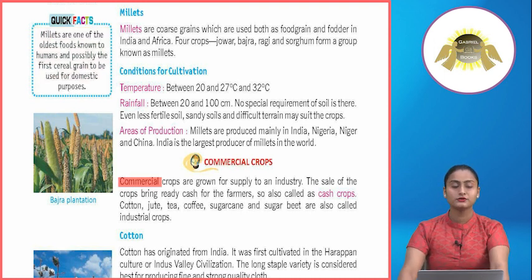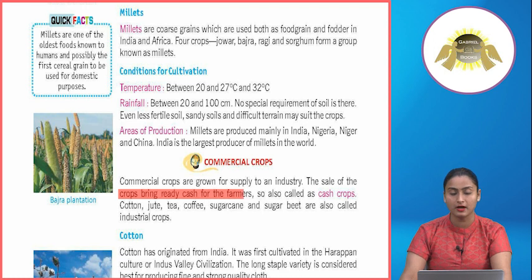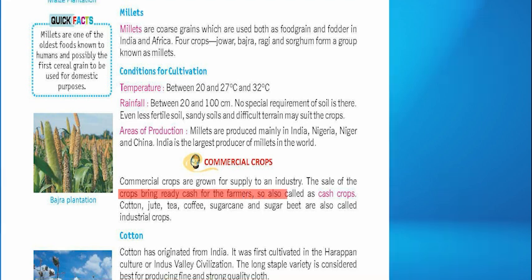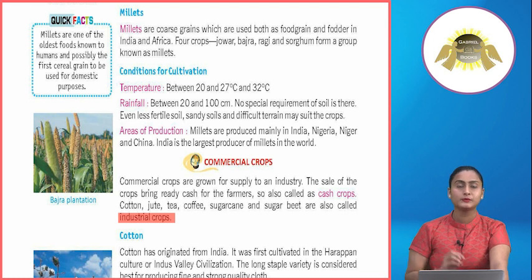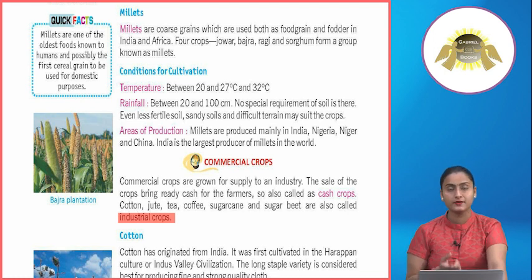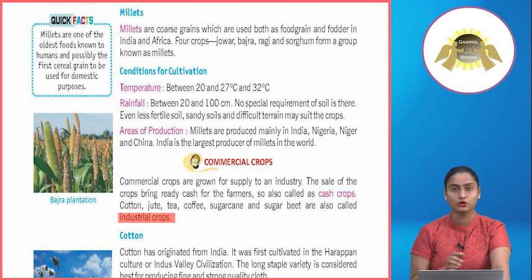Commercial crops are grown for supply to an industry. The sale of these crops brings ready cash for the farmers, which is why they are also called cash crops. Cotton, jute, tea, coffee, sugarcane and sugar beet are also called industrial crops.